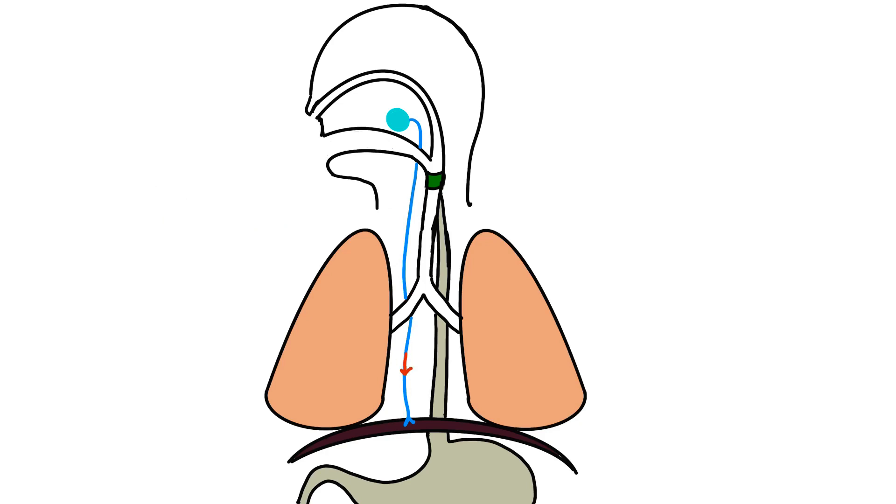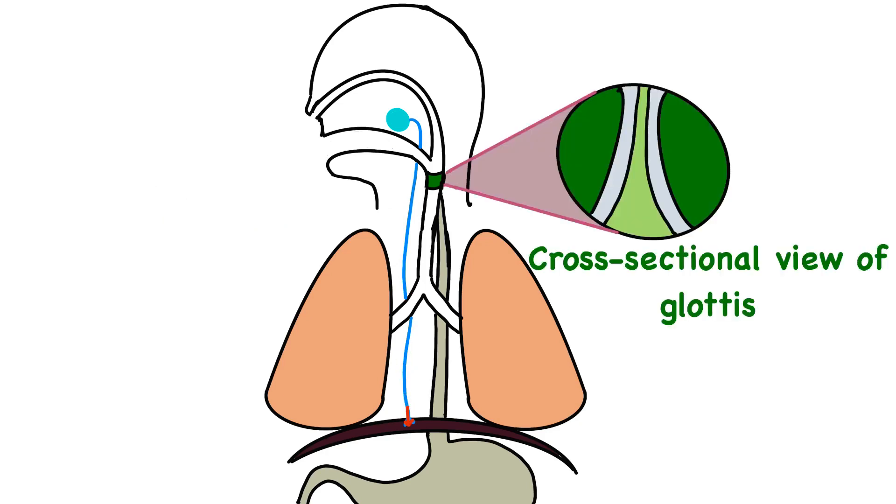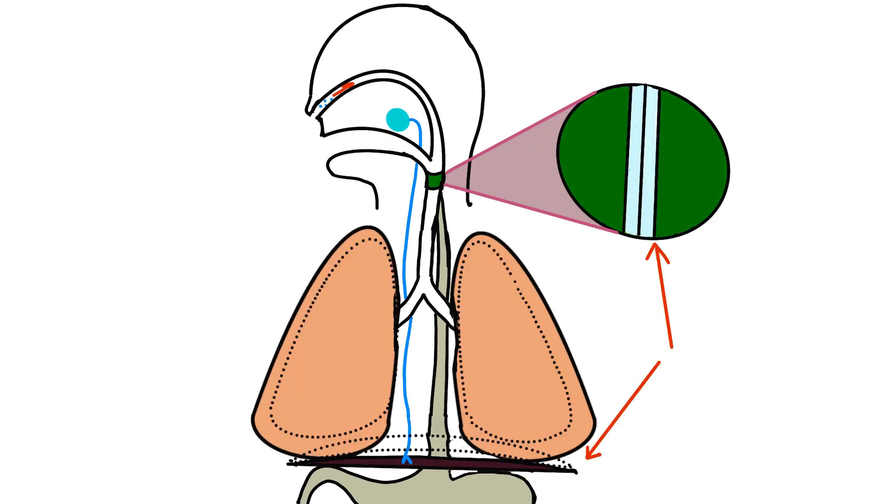It causes rapid contraction of the diaphragm followed by the contraction of the glottis. Then air flow into the windpipe becomes temporarily blocked. When incoming air strikes the glottis, the characteristic hiccup sound occurs.